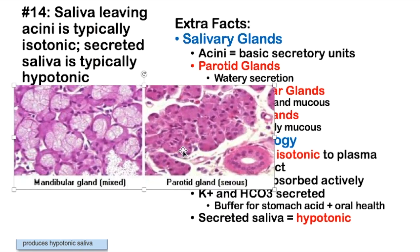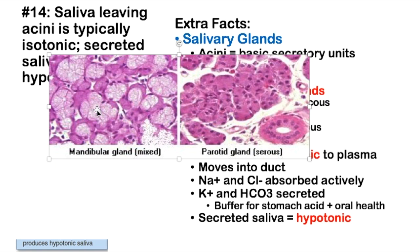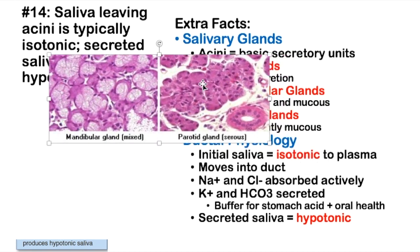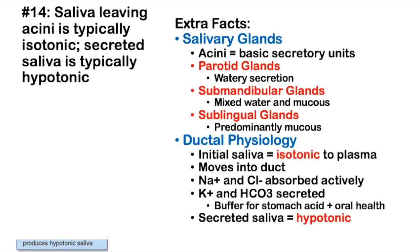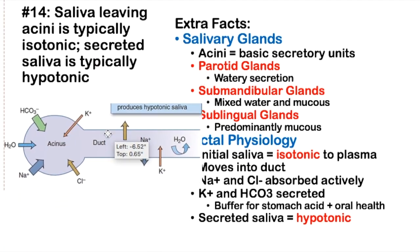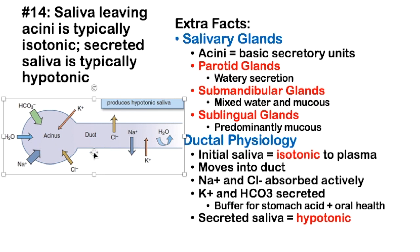Looking at this histologically, the submandibular glands have a mix of whiter mucous-appearing tissue and serous tissue, whereas the parotid gland is very heavy in the darker-staining serous acini. So the parotid gland is more watery for that reason — more serous — and the sublingual is predominantly mucus, while the submandibular is mixed. Initially, the saliva is isotonic to plasma. As it moves down the duct, sodium and chloride are reabsorbed and potassium is excreted. The fluid becomes hypotonic because more chloride and sodium are leaving than potassium is coming in, and water can't leave, so you end up with a hypotonic solution.